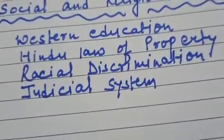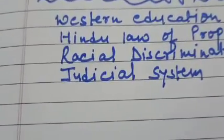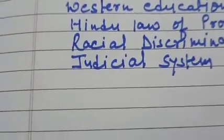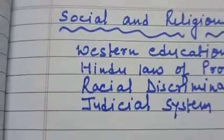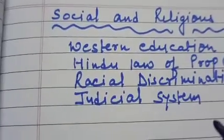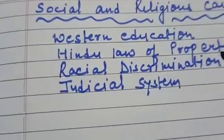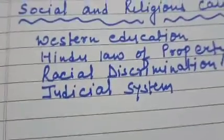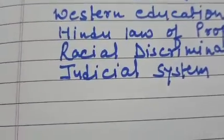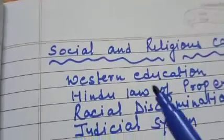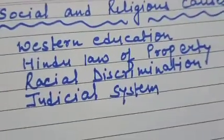One more cause was rumors. Rumors are false news which spread quickly and created panic. One such rumor was that the whole Indian population would lose their caste as the British had sent cartloads of bone dust mixed with flour and sweets being sold in the market. This rumor created widespread panic.